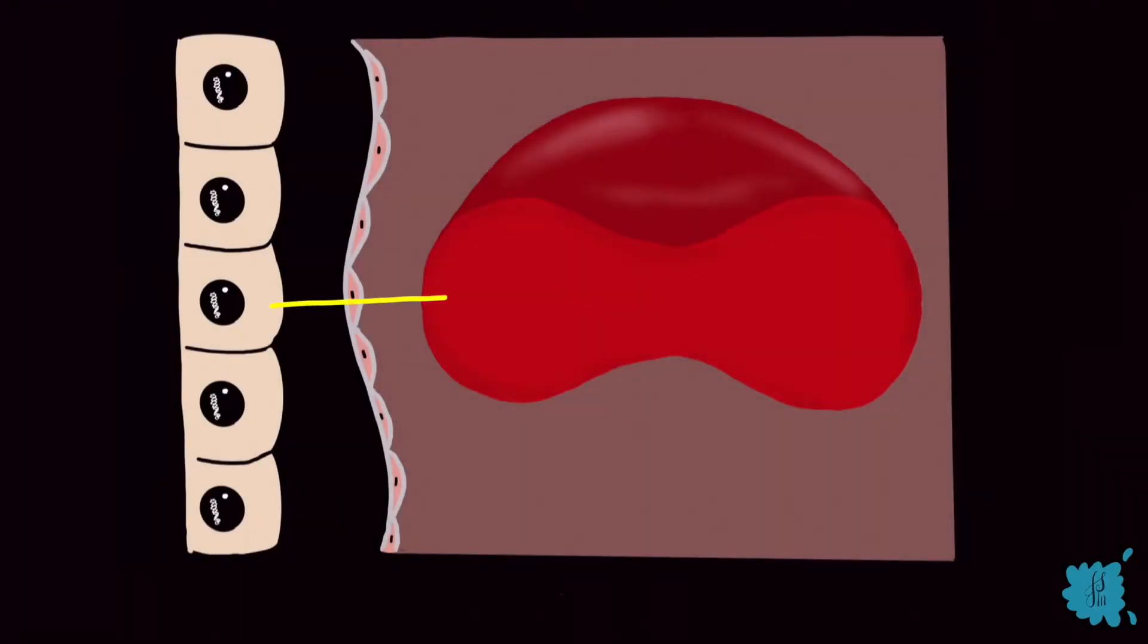The carbon dioxide from the tissues diffuses into the capillaries. It binds to water and by carbonic anhydrase in the RBCs, it forms carbonic acid. That then dissociates into a hydrogen ion and a bicarb ion. Now these reactions are reversible.